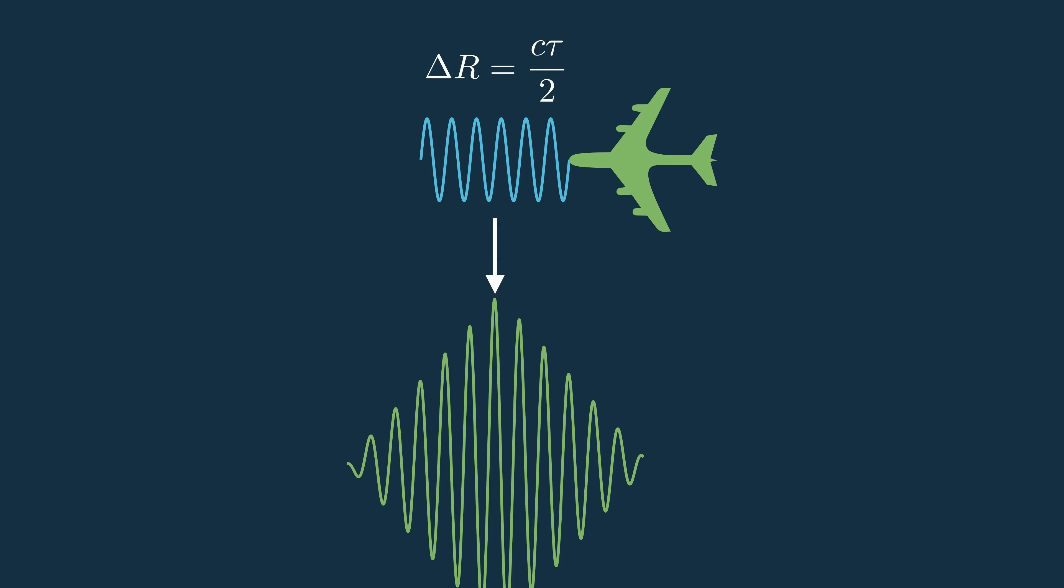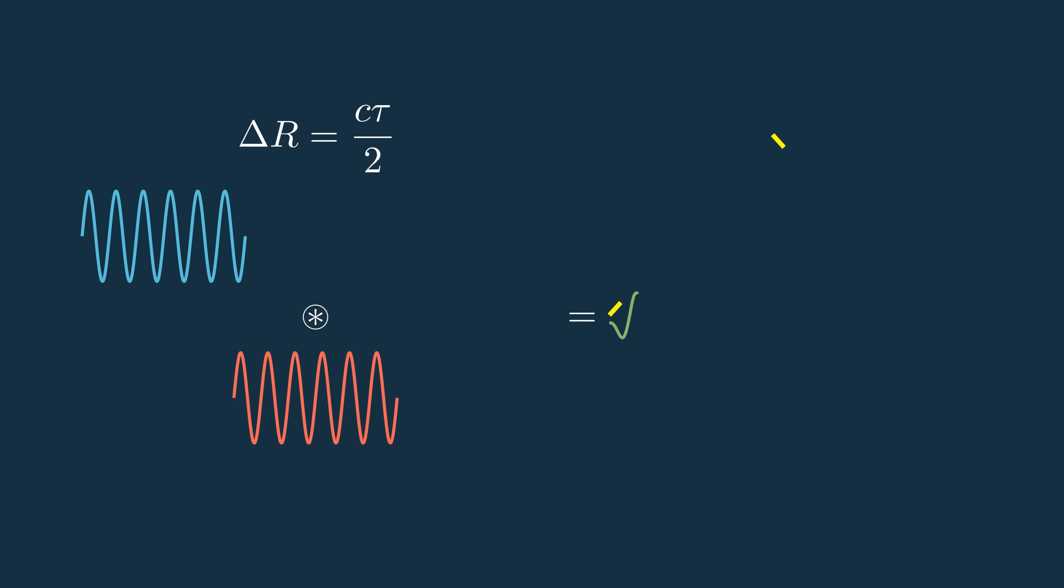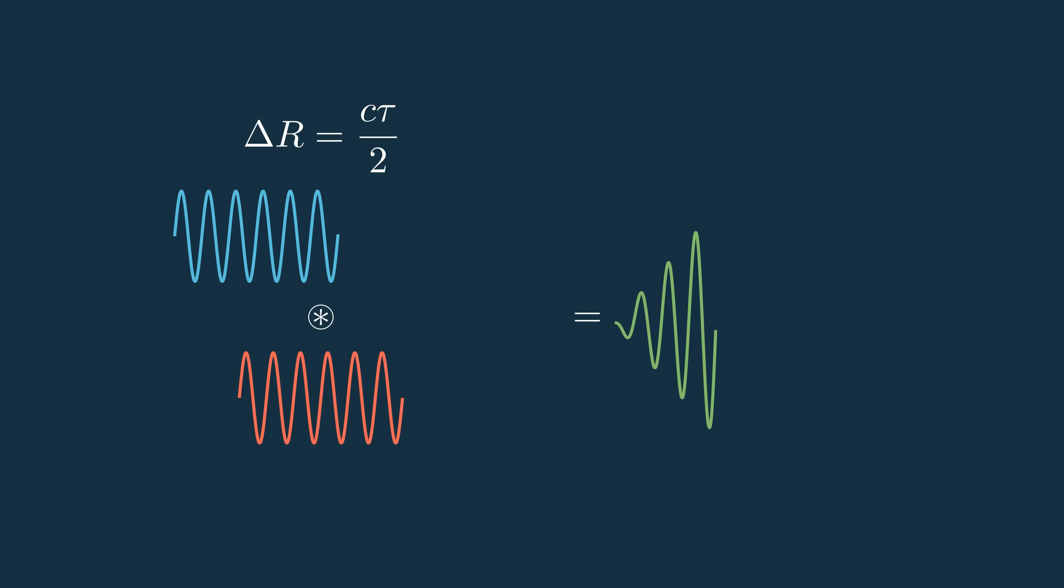When we compute the cross-correlation between transmit and receive, what we get is basically just a sine wave multiplied by a triangle. See, as we slide the transmit across the receive signal, we get more and more overlap causing the magnitude of the sine wave to change,